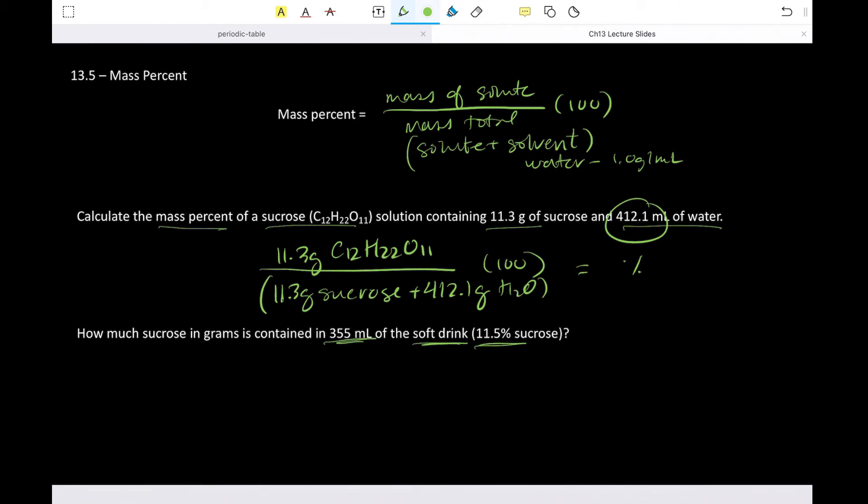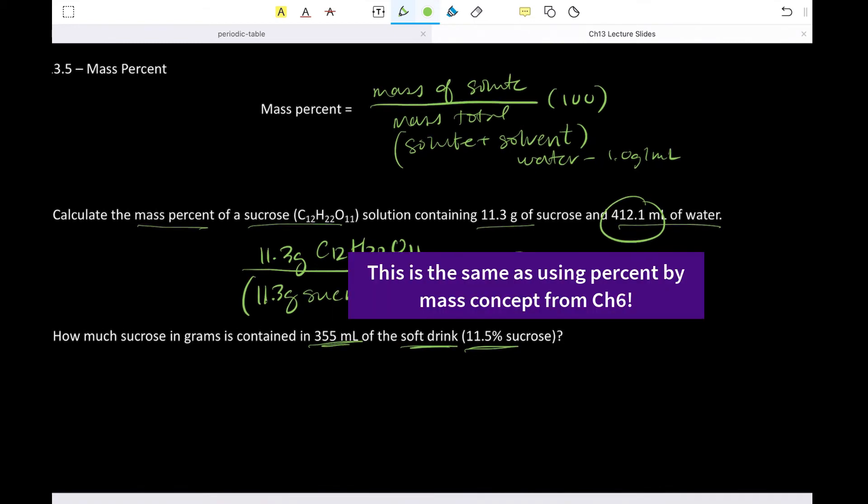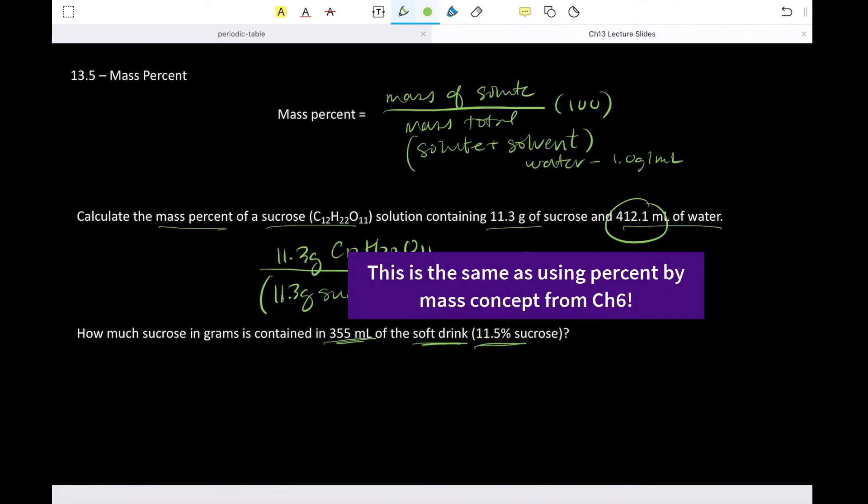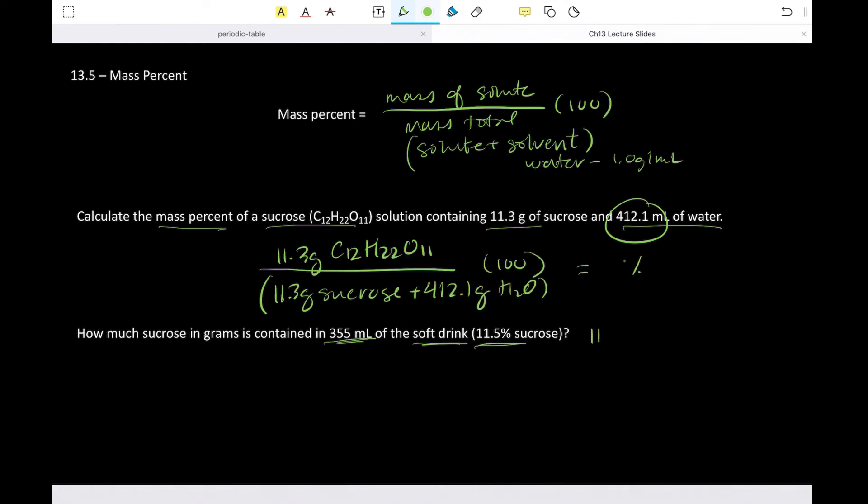And so here it goes back to like when we first introduced the concept of density, where you are best served if you write down what a conversion means. So when I say that a solution is 11.5% sucrose, what I mean is that there are 11.5 grams of sucrose equal to 100 grams of our solution. So writing that down then makes it crystal clear. This converts between mass of sucrose and mass of solution.